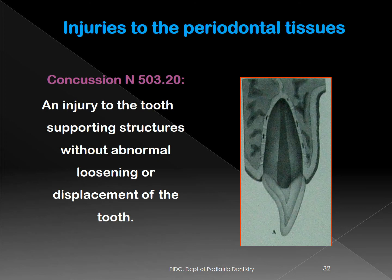The second category in the WHO classification is injuries to the periodontal tissue — the supporting tissues. In this group, the crown and root are intact; only the supporting structure — the periodontal space and bone — is affected. The first type is concussion: an injury to the tooth and supporting structures without abnormal loosening or displacement.